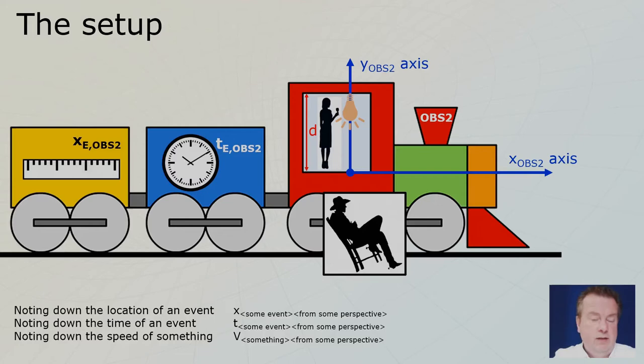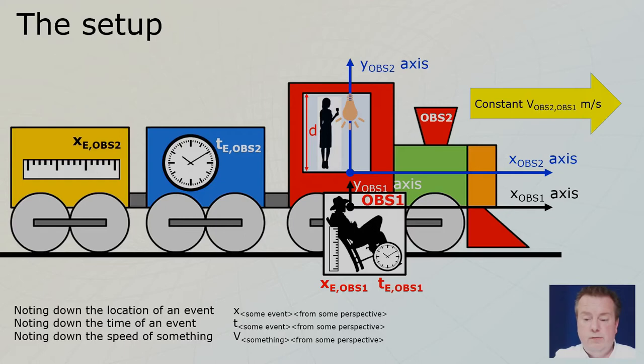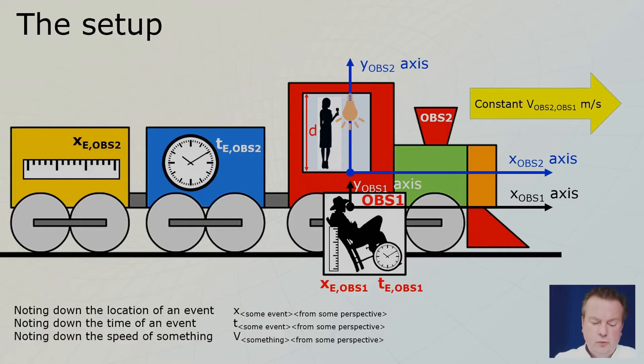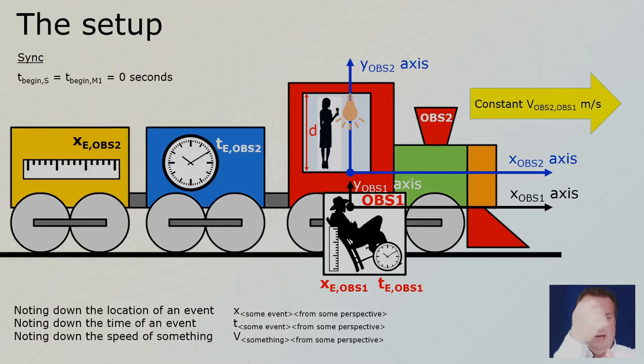Then there is observer number one, who is stationary — stationary relative to the track, relative to the ground. Observer one also has his own measuring device, his own clock, and his own frame of reference. Observer one says that observer two is moving at a constant velocity v to the right. They also sync at the beginning: they are at the same location, the y-axes are at the same point, and they sync their clocks so both are set to zero — this is their origin.